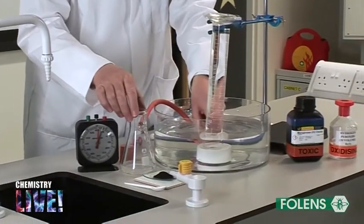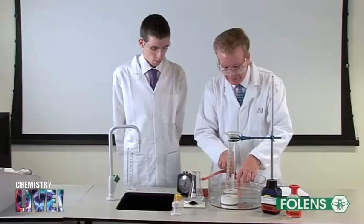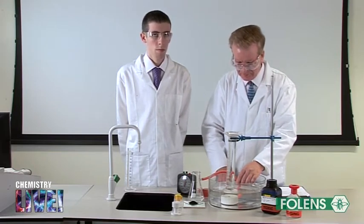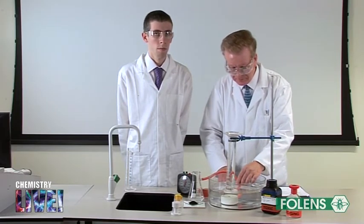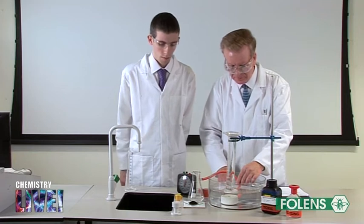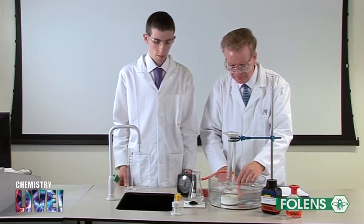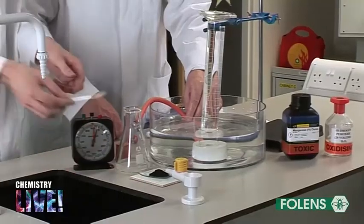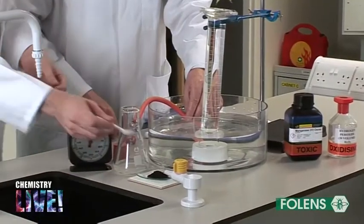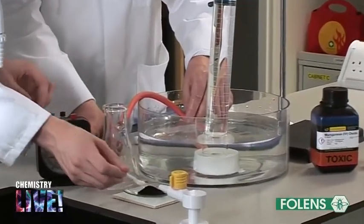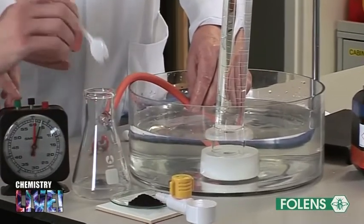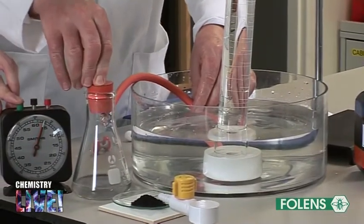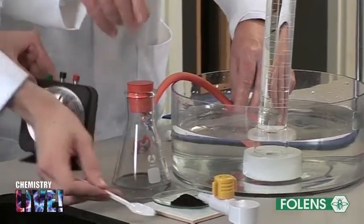One person will take charge of reading the volume of gas given off and the other person will take charge of starting the reaction and measuring the time. When you are ready to begin the experiment, quickly add a small amount of manganese dioxide — enough to fit on the tip of a spatula — to the hydrogen peroxide in the conical flask. Quickly put on the rubber stopper and immediately start the stopwatch.